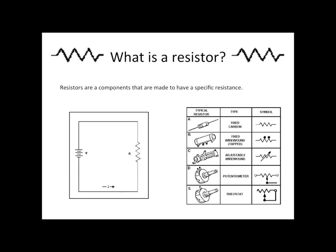So what is a resistor? A resistor is a component that's made to have a specific resistance, and you'll see later on how this becomes very useful. You can dictate what the voltage is at any given point, or you can lower the power. There's a lot of different things you can do with a resistor.